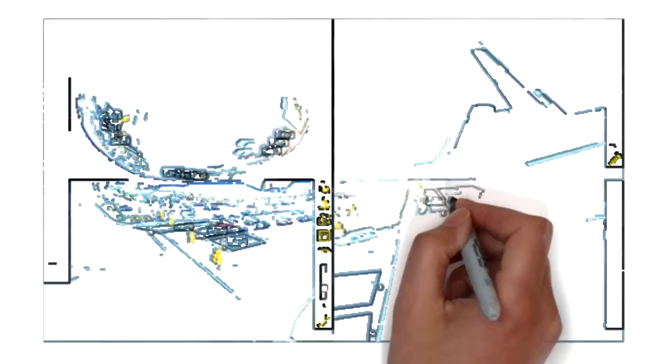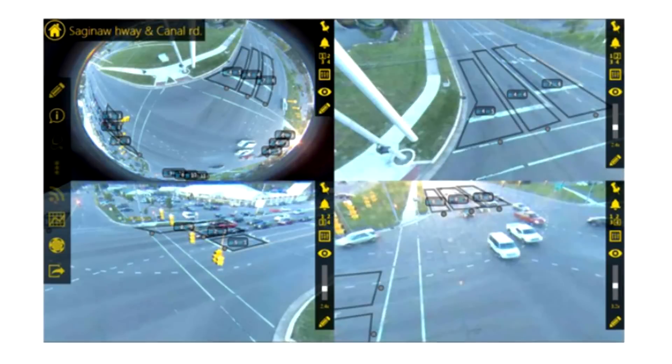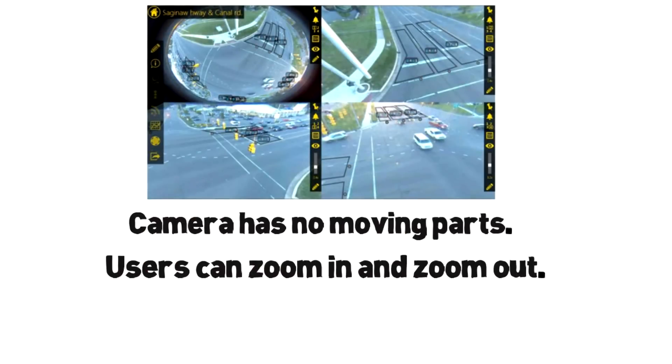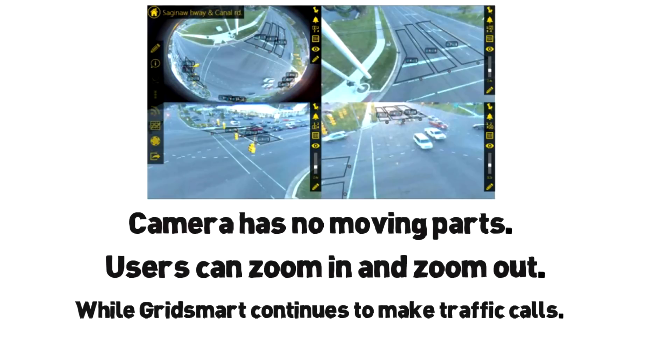The fisheye world view can be flattened out in automated software for a more traditional look. The camera has no moving parts, yet users can zoom in and zoom out with GridSmart while the system continues to make traffic calls, count, classify, and measure your activity in all directions no matter what you're looking at.